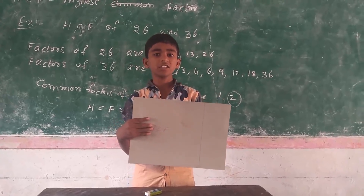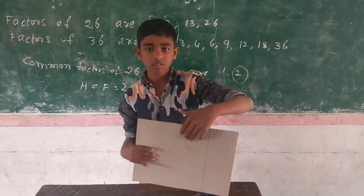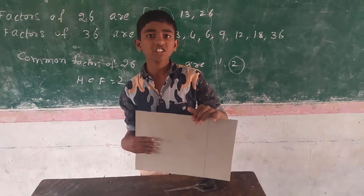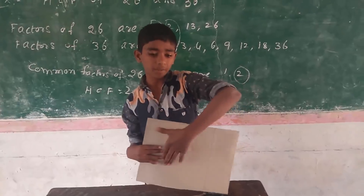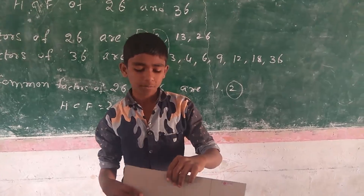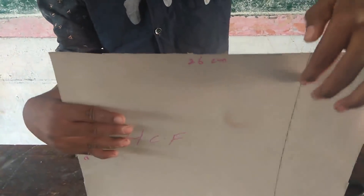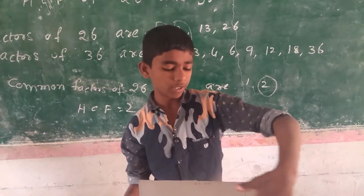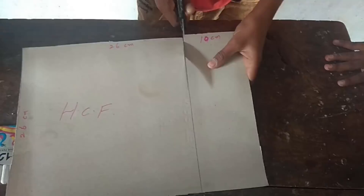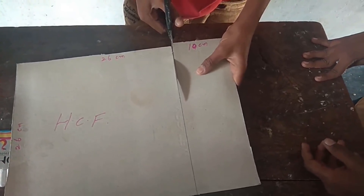First of all we take a rectangular sheet of 36 in length and 26 in width. What is the highest common area which I can remove from this rectangle? If you observe this rectangle, 26 by 26 square is the maximum area, so I will remove it from the rectangle.